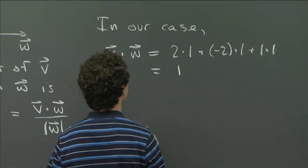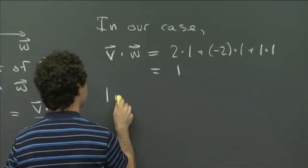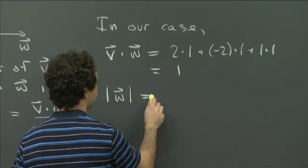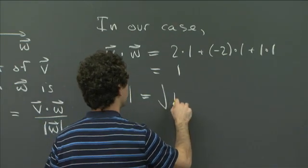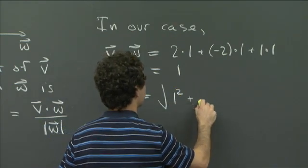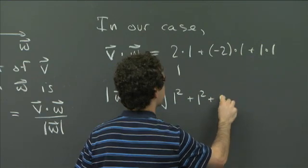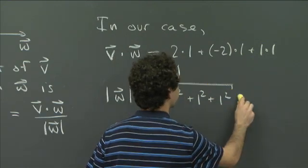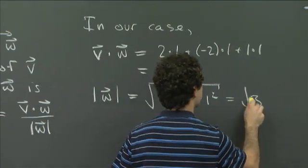And the length of w, well, it's just your usual length formula, is 1 squared plus 1 squared plus 1 squared, all things square rooted, which is equal to the square root of 3.